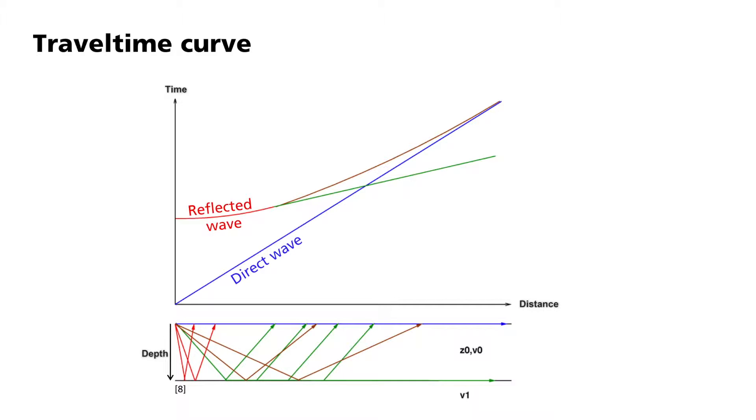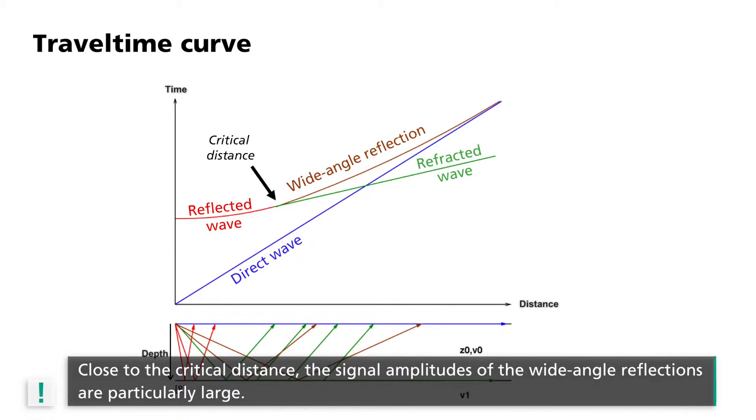From the critical distance, the refracted wave arrives alongside the reflected wave. This is also referred to as the head or Mintrop wave and is shown here in green. It propagates with a faster velocity along the layer boundary and overtakes the direct wave at a greater distance. The reflections that occur beyond the critical distance are termed hypercritical, with this being the area of wide-angle reflection. In the vicinity of the critical distance, the signal amplitudes of the wide-angle reflections are particularly large and relatively easy to observe.